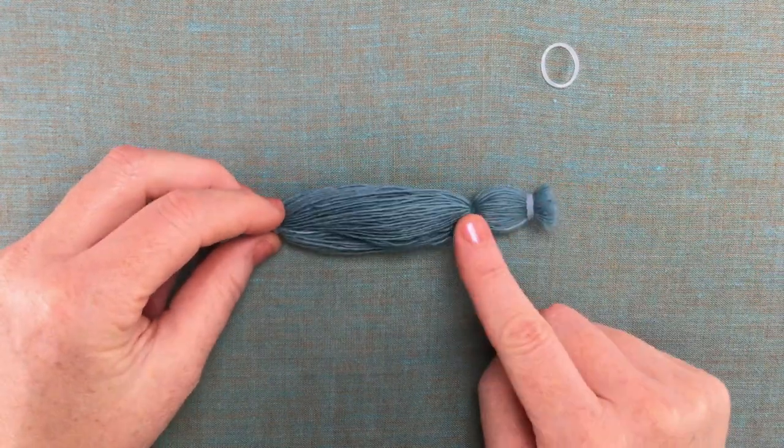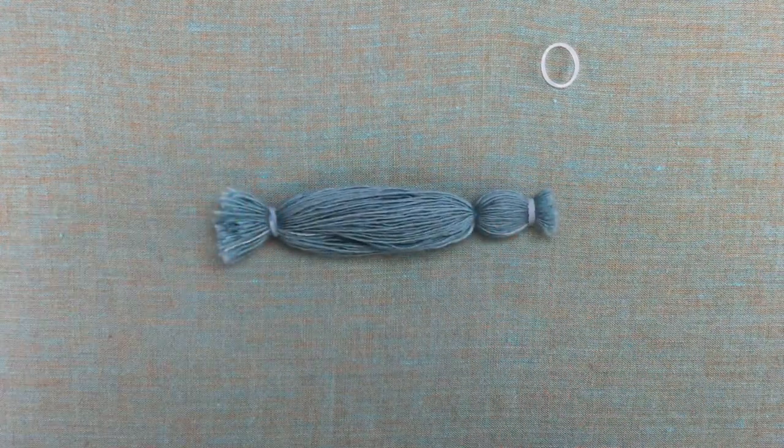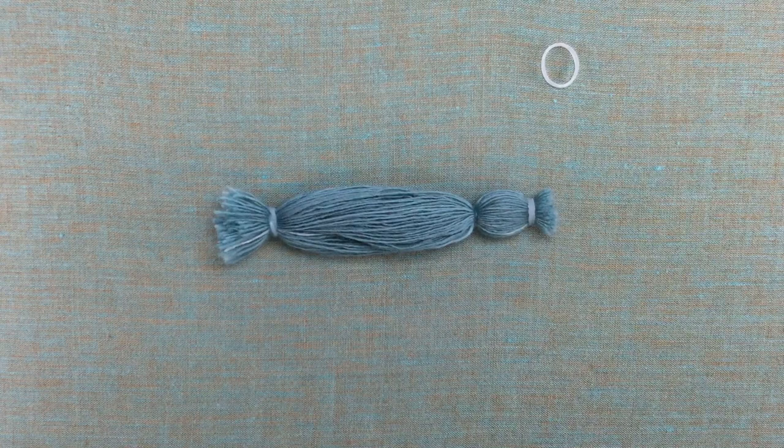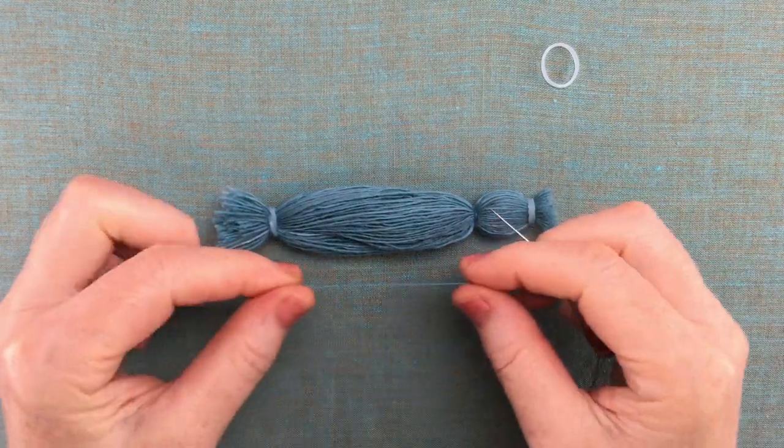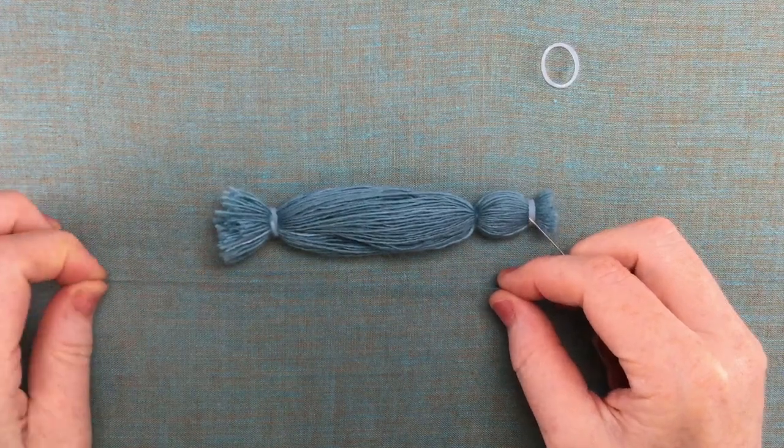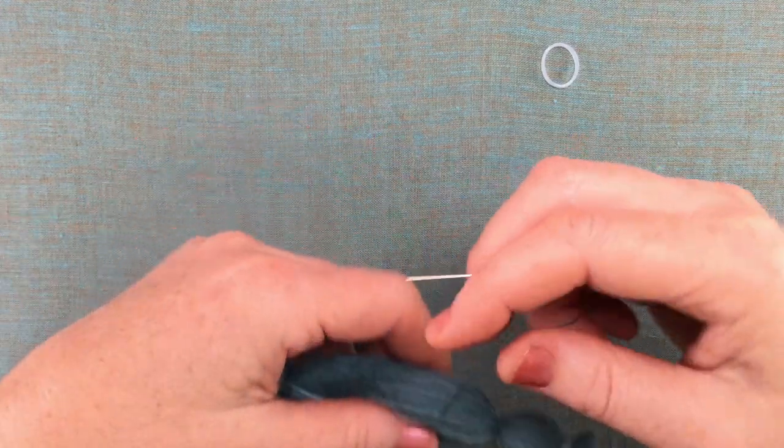Now here I've started to bind the fibers together with thread, and I'm going to show you how to do that. First you want to thread your needle with a single strand of embroidery thread and leave a little tail like this before you begin wrapping.